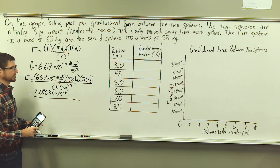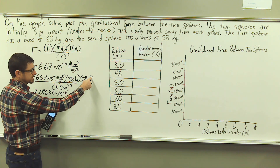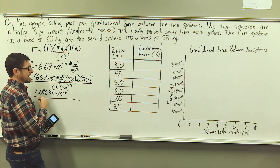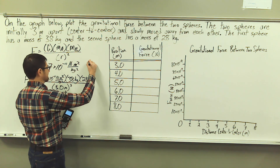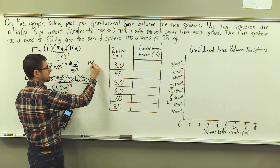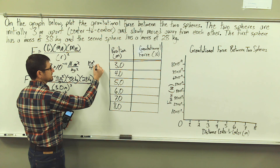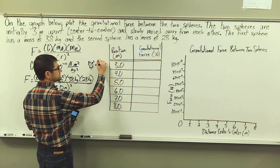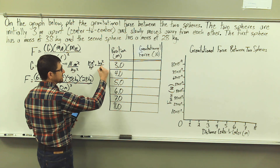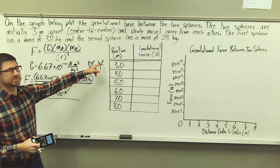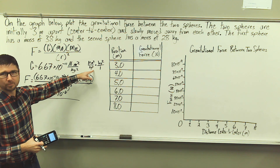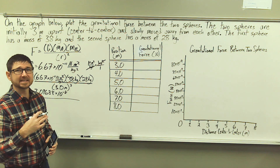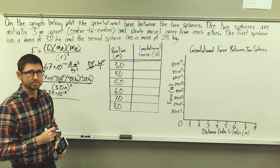In my numerator, I'm going to have a value of 7.09688 times 10 to the negative 8th — putting this in scientific notation since the number is so small. Now for units: we have a kilogram times a kilogram, giving us kilogram squared. So in the numerator we have newton meters squared per kilogram squared times kilogram squared. The kilogram squared terms cancel, leaving us with units of newton meters squared.